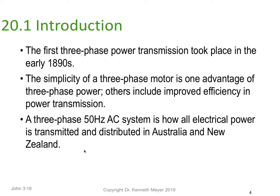Other advantages include improved efficiency in power transmission — particularly the number of wires you have to use, the size of the wires, and the types of devices used to increase and decrease the voltage, called transformers. A three phase 50 Hz AC system is how electrical power is transmitted and distributed throughout Australia and New Zealand, which is where we live.